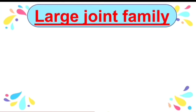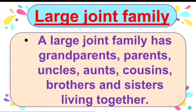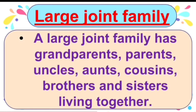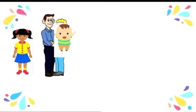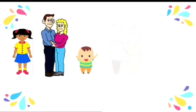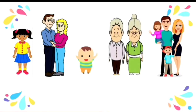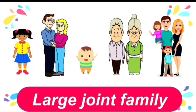Now, large joint family. A large joint family has grandparents, parents, uncles, aunts, cousins, brothers and sisters living together. Look at this picture — one girl has parents, a younger brother, grandparents, aunts and cousins. She is having a large joint family.